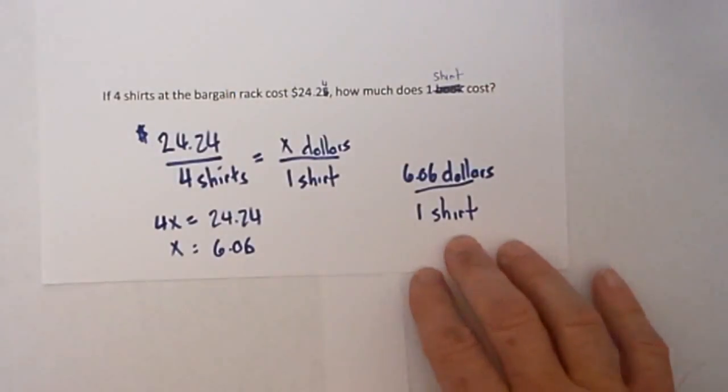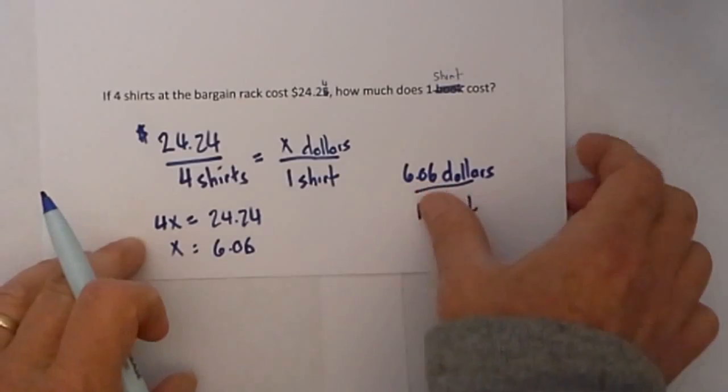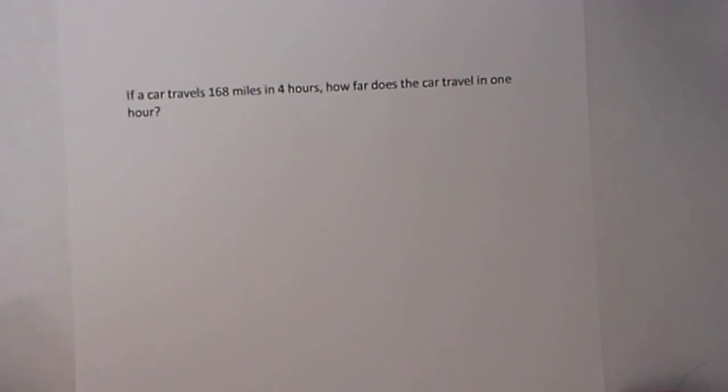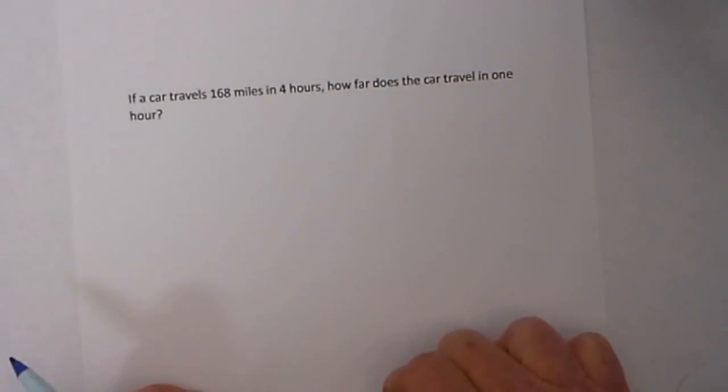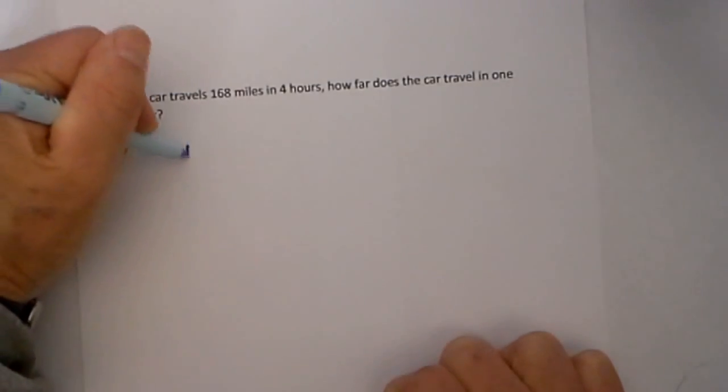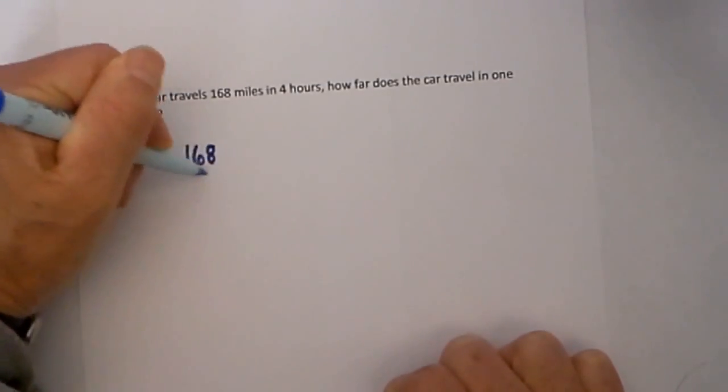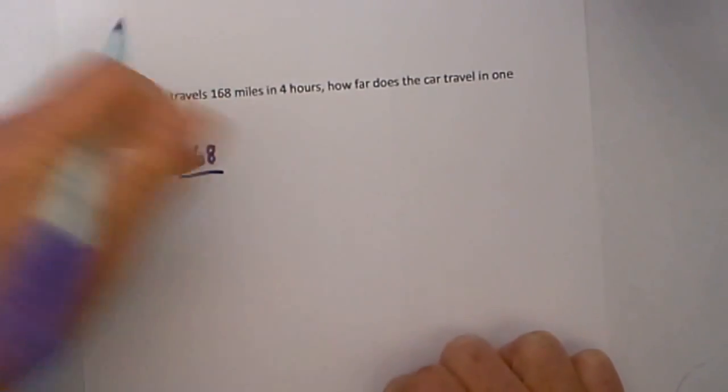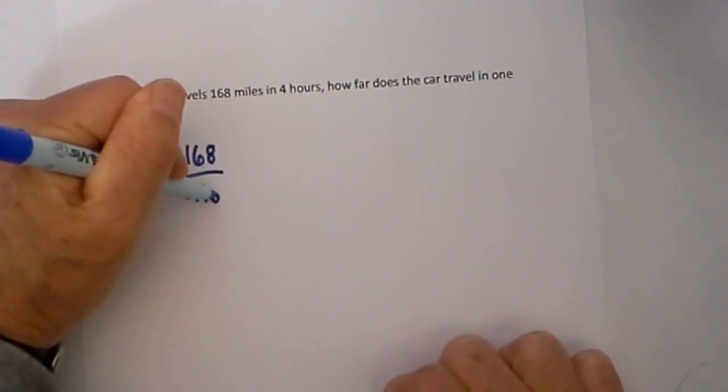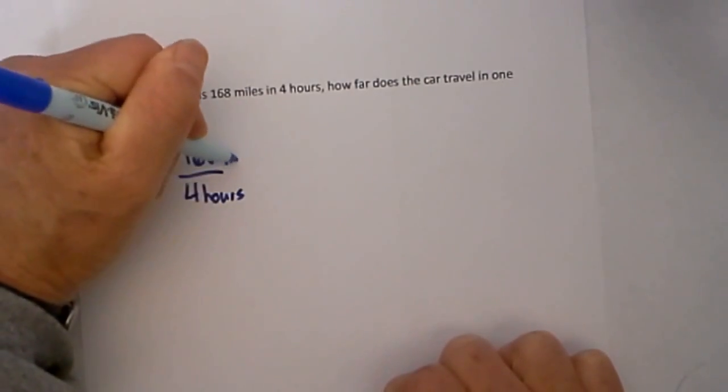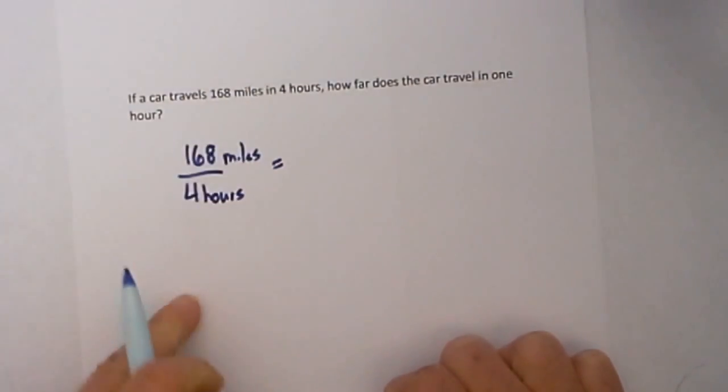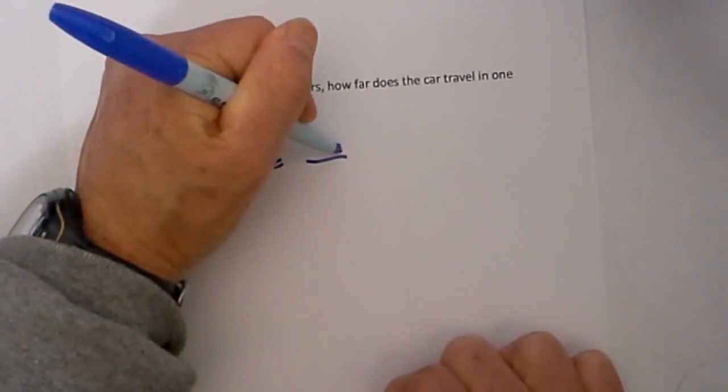Finally, if a car travels 168 miles in 4 hours, how far does it travel in 1 hour? So I'm going to do 168 miles. That is how far it travels and that takes 4 hours. When we set up the proportion, I need miles on top and hours on the bottom so they are the same.